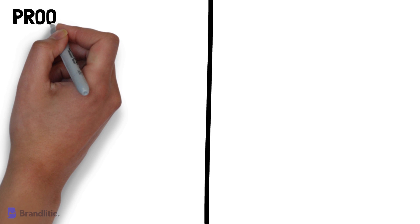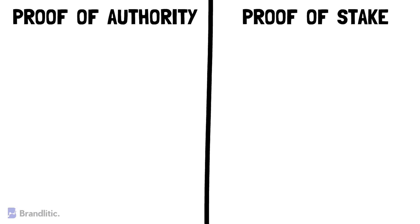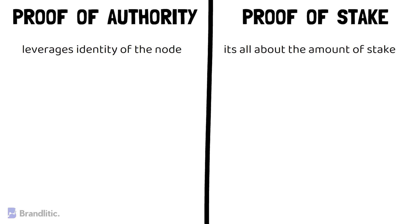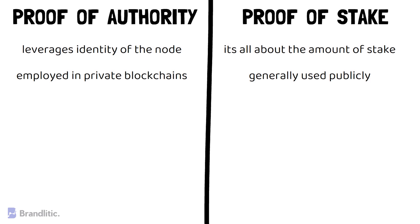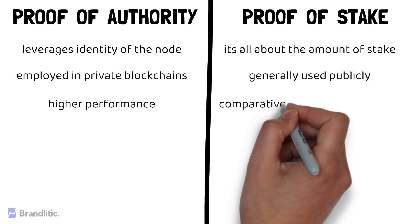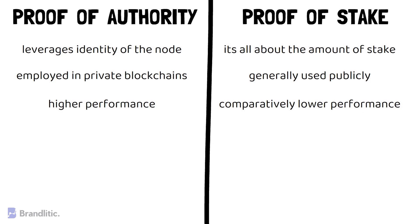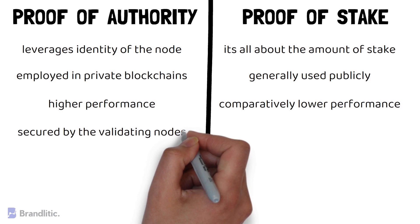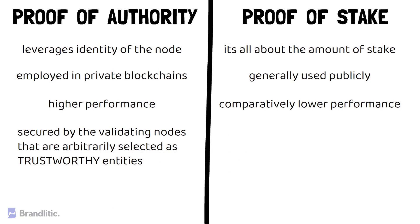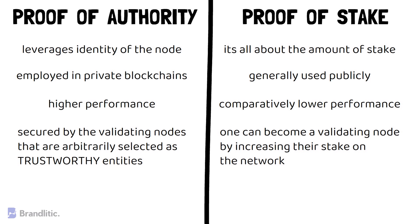Next, Proof-of-Authority vs. Proof-of-Stake: Proof-of-Authority leverages the identity of the node, whereas it's all about the amount of stake you have on the network in Proof-of-Stake. Proof-of-Authority is more suitable for private organizational structures and is usually employed in private blockchains, whereas Proof-of-Stake is generally used publicly. As Proof-of-Authority is private, it offers higher performance compared to Proof-of-Stake. In Proof-of-Authority, blockchains are secured by validating nodes that are randomly selected as trustworthy entities, whereas in Proof-of-Stake, one can become a validating node by increasing their stake on the network.